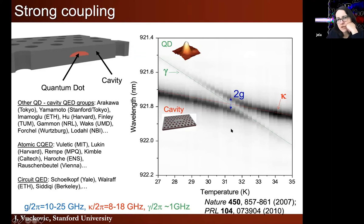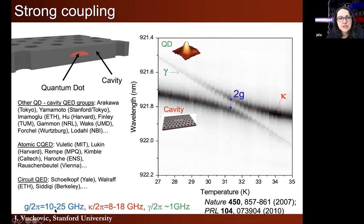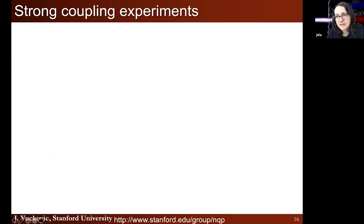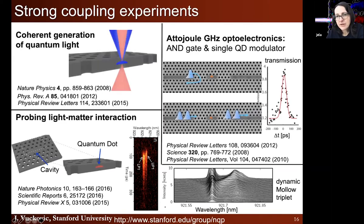You can do these experiments in other platforms: atomic cavity QED with large cavities, coupling neutral atoms to photonic crystal cavities, and circuit QED — experiments in the microwave regime with Josephson junctions. At Stanford there is also work on circuit QED. When you have a strongly coupled system, you can do a lot of interesting things, which we'll go through today: generation of different quantum states of light, probing the anharmonic ladder of dressed states, and classical switching applications.